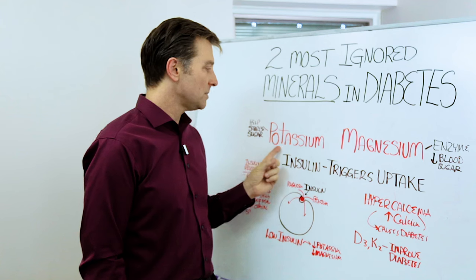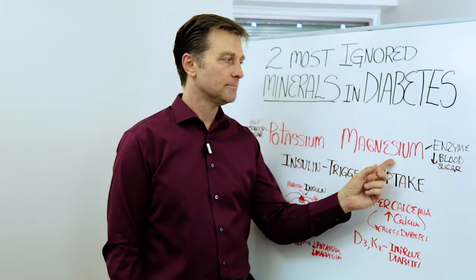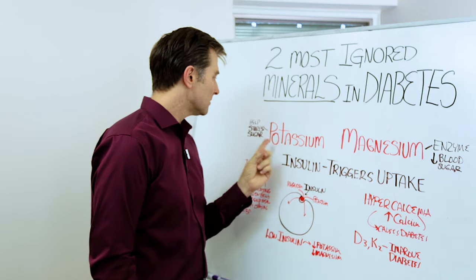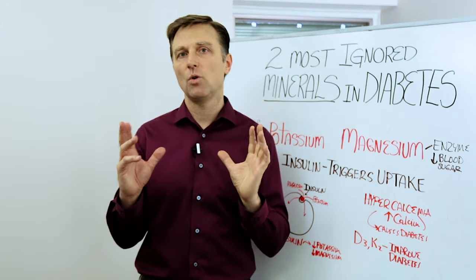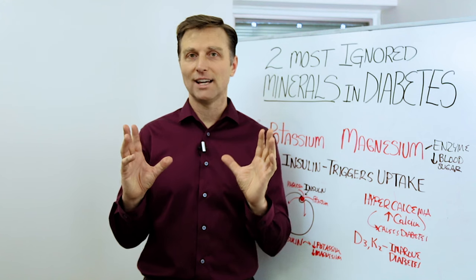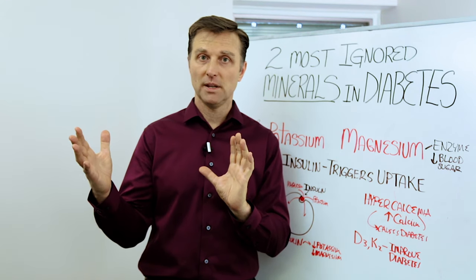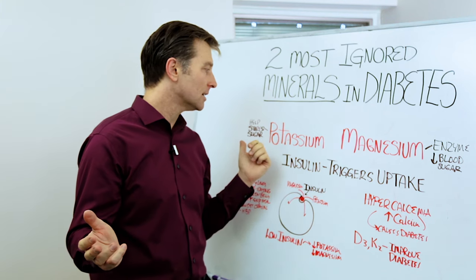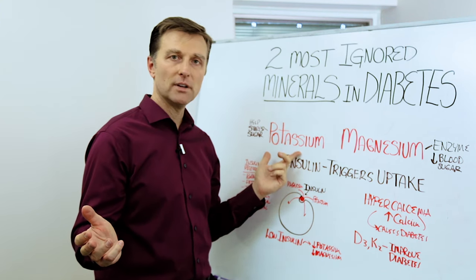There are two minerals. One is potassium and one is magnesium. Magnesium makes an enzyme to help lower the blood sugar. Potassium is involved with helping the storage of sugar called glycogen. So your body will store sugar in between meals in your liver and your muscles. If you don't have that capacity, it could be because you don't have enough potassium.